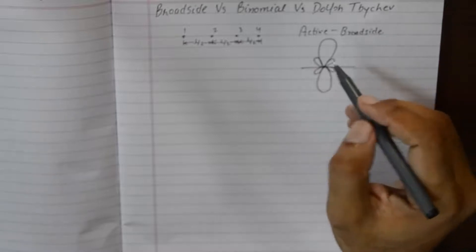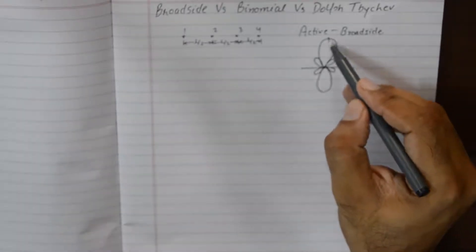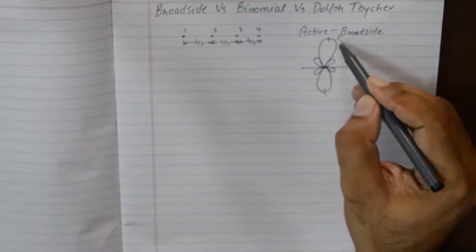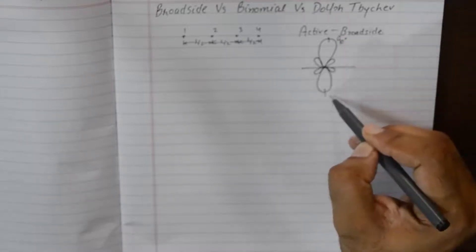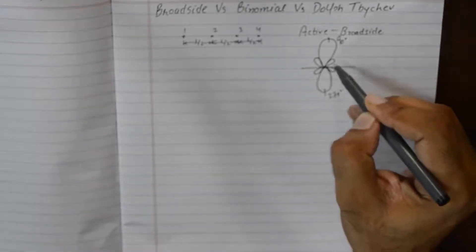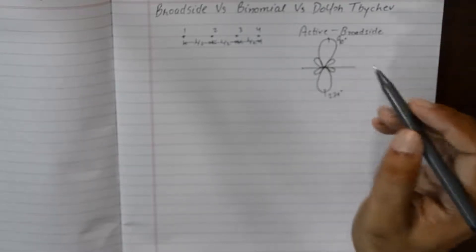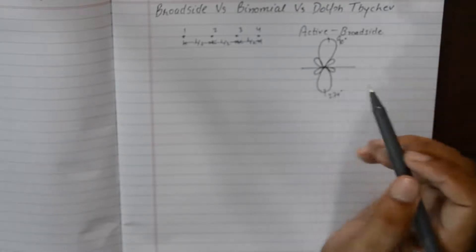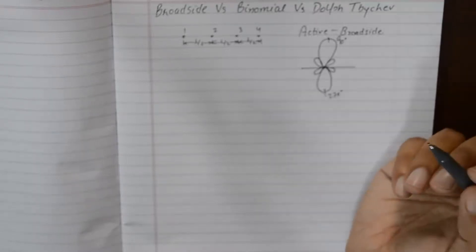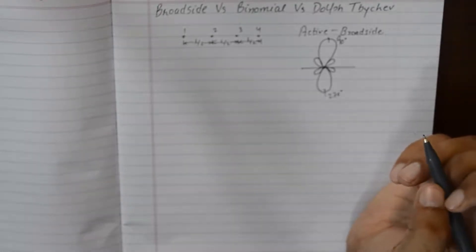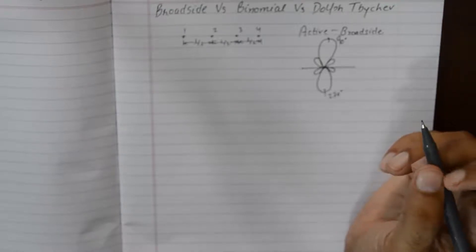We have major lobes at 90 degrees and 270 degrees, and we have side lobes occurring at different angles depending upon how many elements we use. Now it is very important to understand why we make a binomial array in the first place.